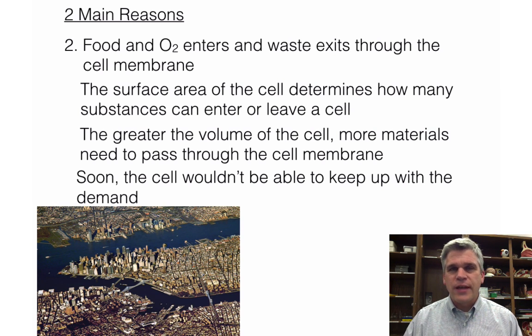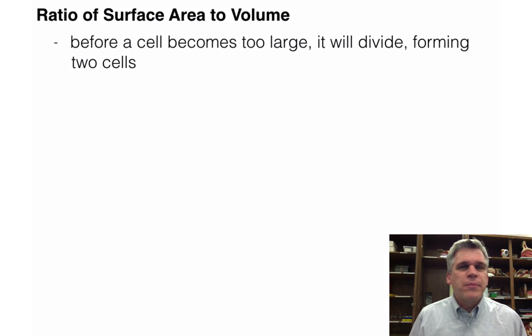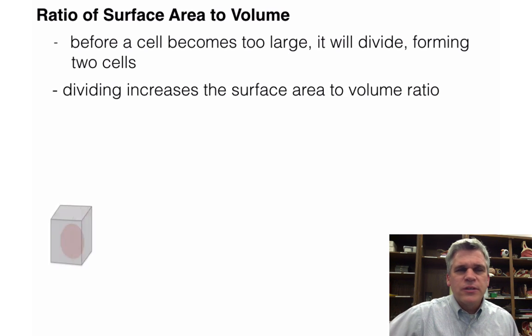We'll take a look at this in a future lab. Let's take a look at this idea of why cells, if they get too big, they can't get enough materials inside. We know that before it becomes too large, it will divide and then form into two cells. By dividing, that increases the surface area to volume ratio. And so let's take a look at what this means.